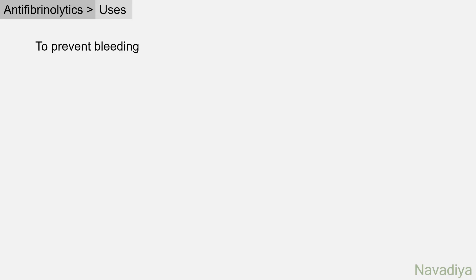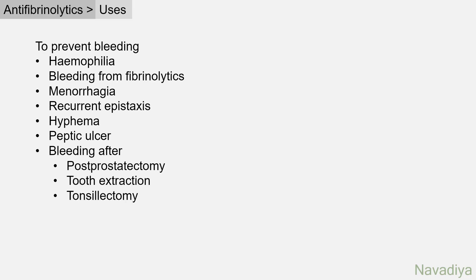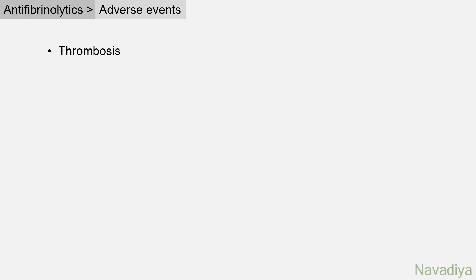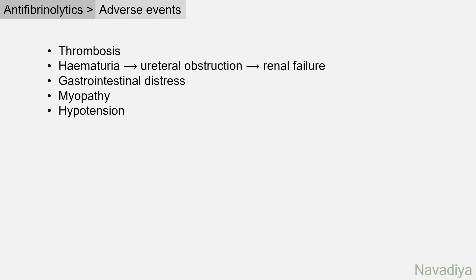Antifibrinolytics are used when you want to prevent bleeding — for example, in patients with hemophilia, bleeding from fibrinolytics, menorrhagia, recurrent epistaxis, hyphema, peptic ulcer, bleeding after prostatectomy, tooth extraction or tonsillectomy, and cardiopulmonary bypass surgery. Adverse events include thrombosis. In patients with hematuria, unlysed clots may cause urethral obstruction leading to renal failure. Other adverse events are gastrointestinal distress, myopathy, and hypotension when given intravenously. This completes both topics of the video.